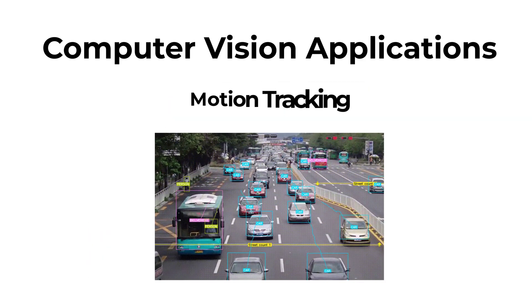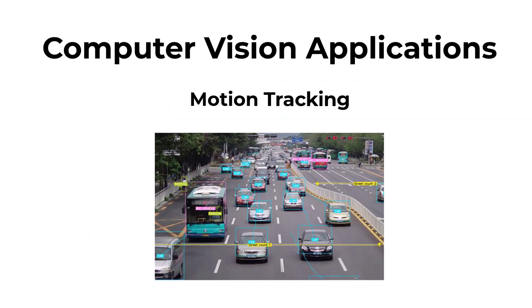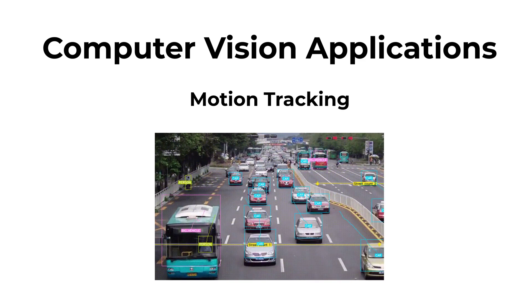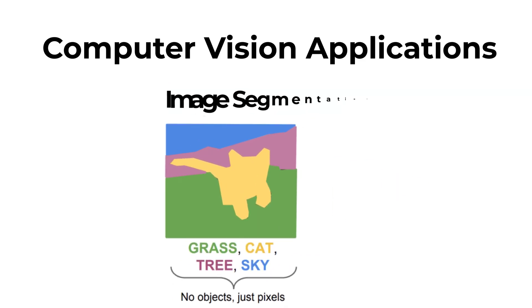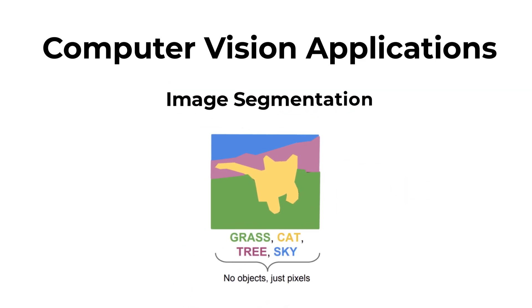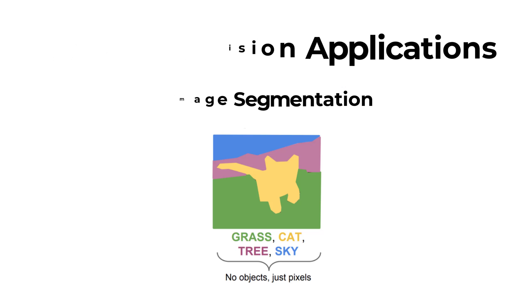To track moving objects over time, you can use motion tracking. To divide an image into meaningful parts, you can do an image segmentation project.